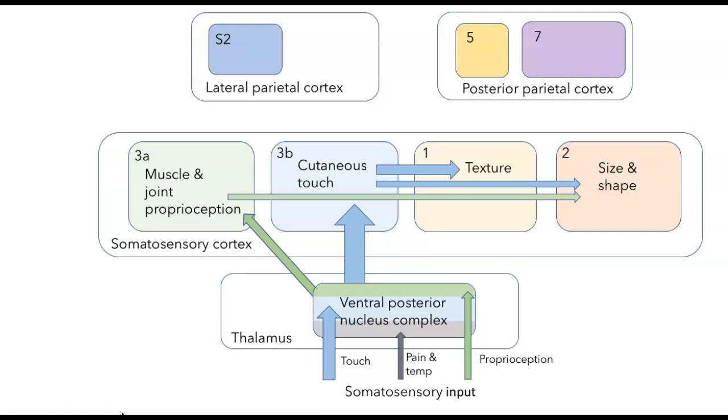Now I should tell you that even though this figure is already getting pretty complicated, it's an oversimplification. For example, areas 1 and 2 both get direct input from the thalamus, and there's also a lot of reciprocal connections between each of the areas in the somatosensory cortex.